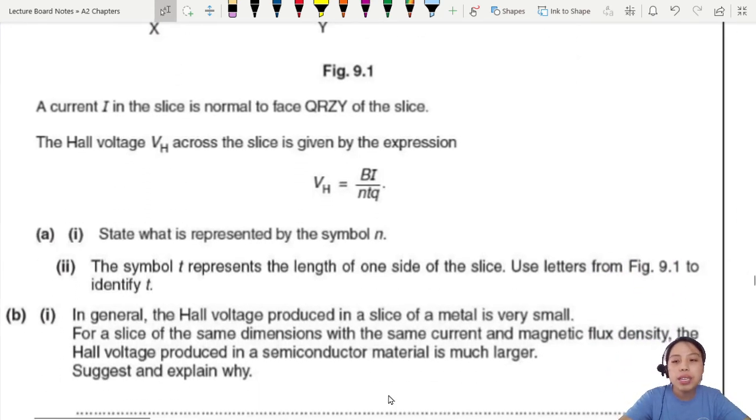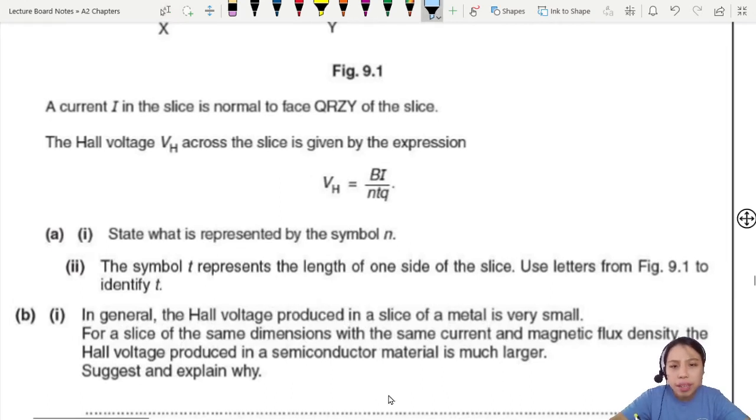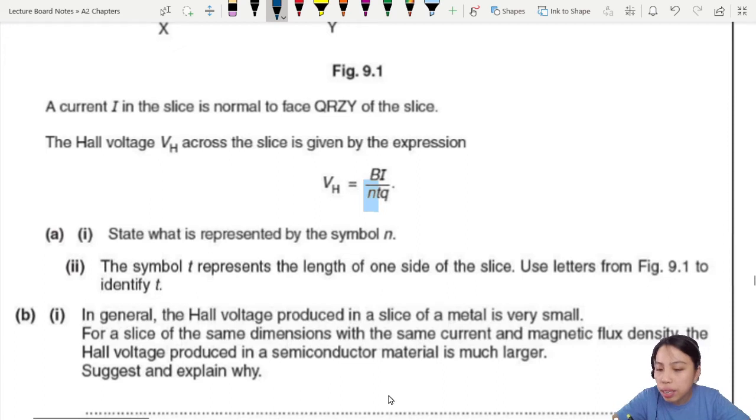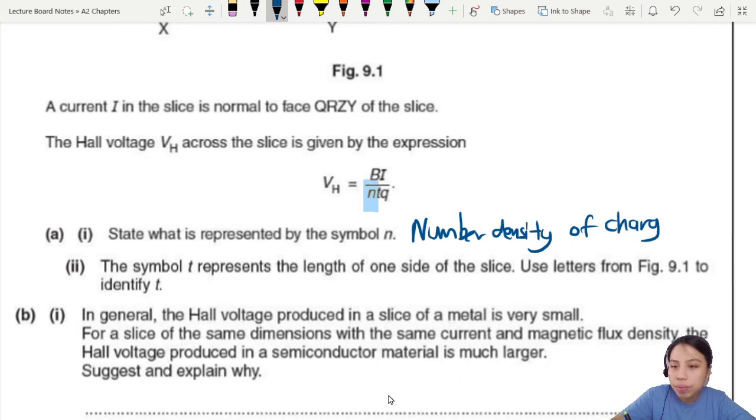So it is state what is represented by the symbol N. So N here is referring to the number density of charge carriers. Number density of charge carriers can be holes, which are positive charges, could be electrons, which are negative charges. If you forgot how this N thing works, go check out the AS video on electricity and current. N is a pretty important player in this chapter. So make sure you know what is N and where this equation comes from.